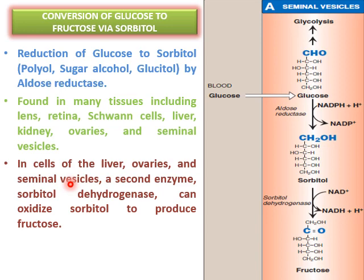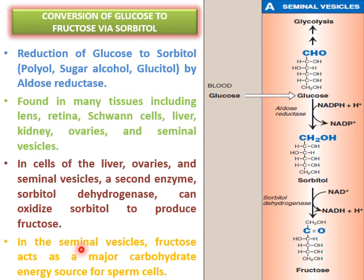In hepatocytes, ovaries, and seminal vesicles, a second enzyme called sorbitol dehydrogenase converts sorbitol into fructose: sorbitol is oxidized to fructose and NAD⁺ is reduced to NADH. Sorbitol dehydrogenase is present in seminal vesicles, liver, and ovaries. Especially in the seminal vesicles, fructose is the main energy source for the maturation of sperm cells.